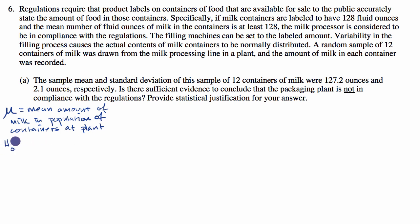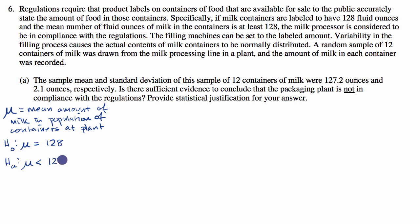Our null hypothesis is that we are in compliance — we say that the mean for our population of containers is actually 128, which is our minimum to be in compliance. Our alternative hypothesis is that we are not in compliance, meaning the true population mean is less than 128 fluid ounces.